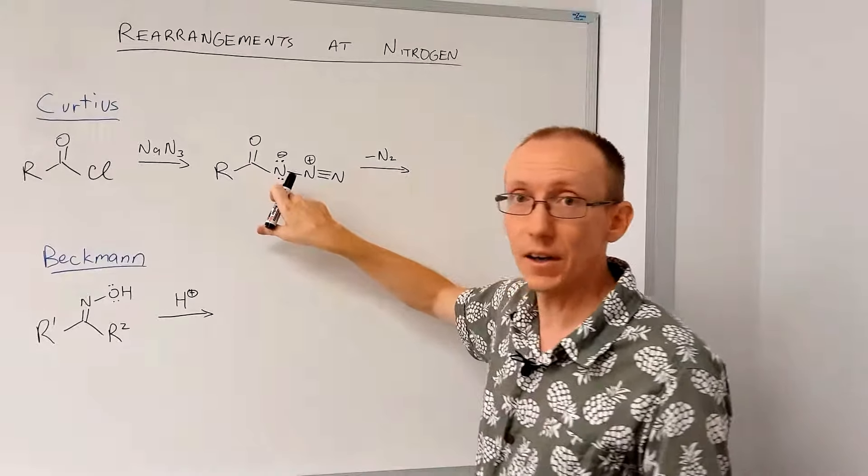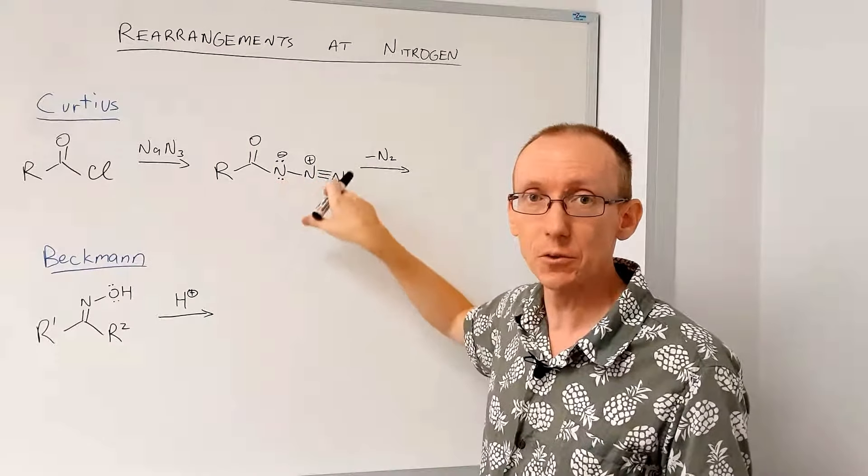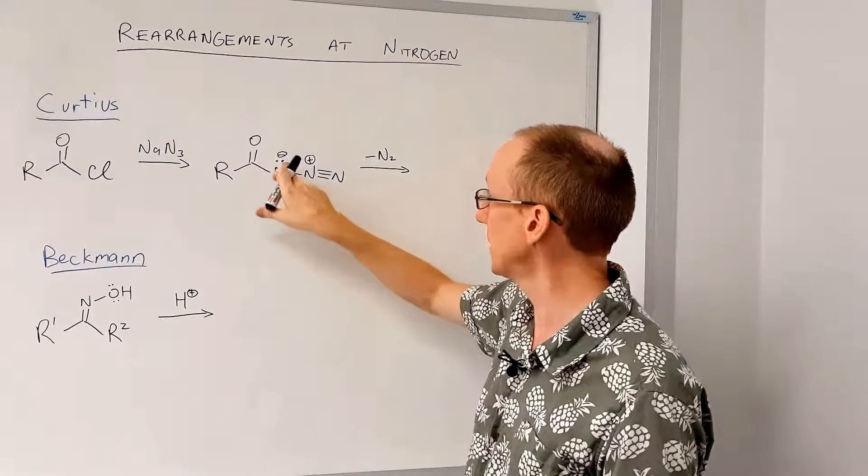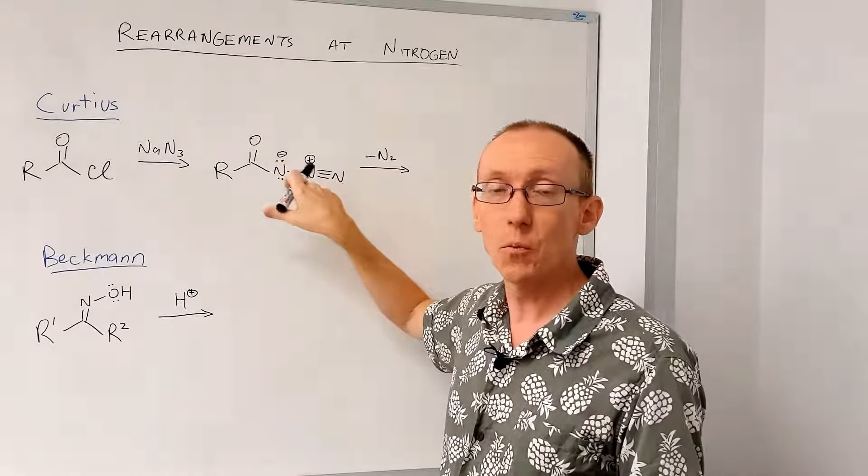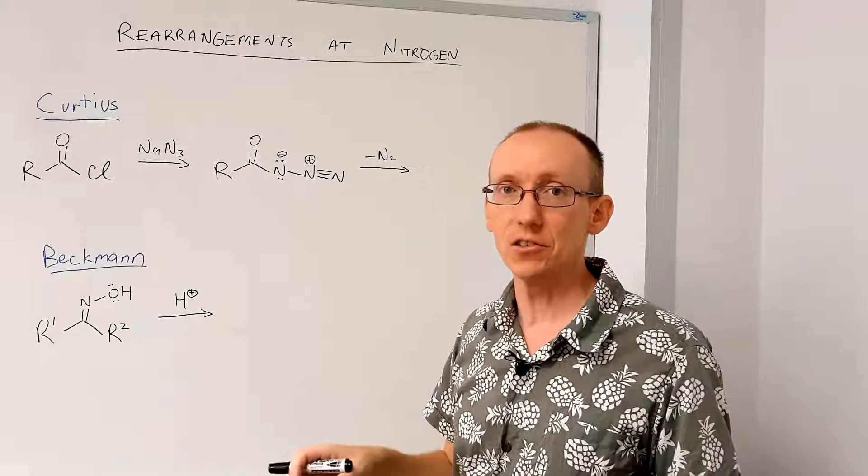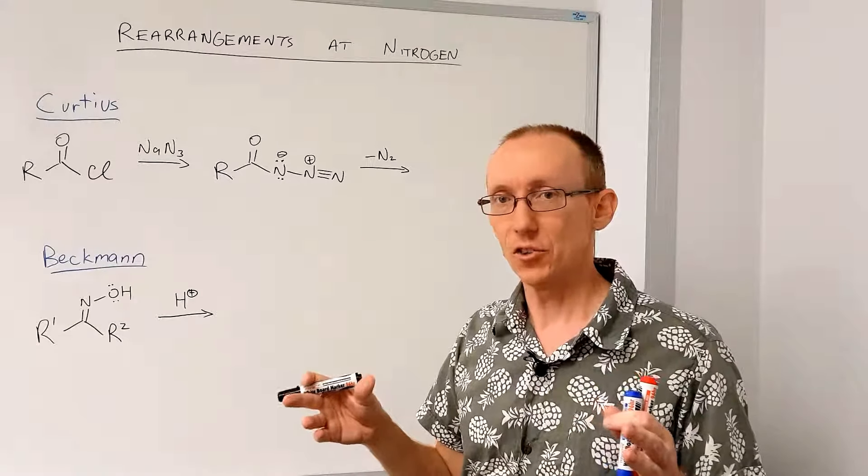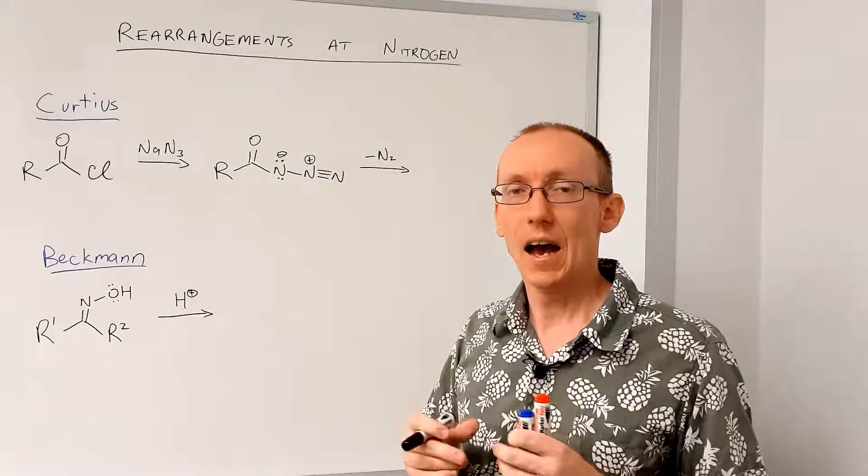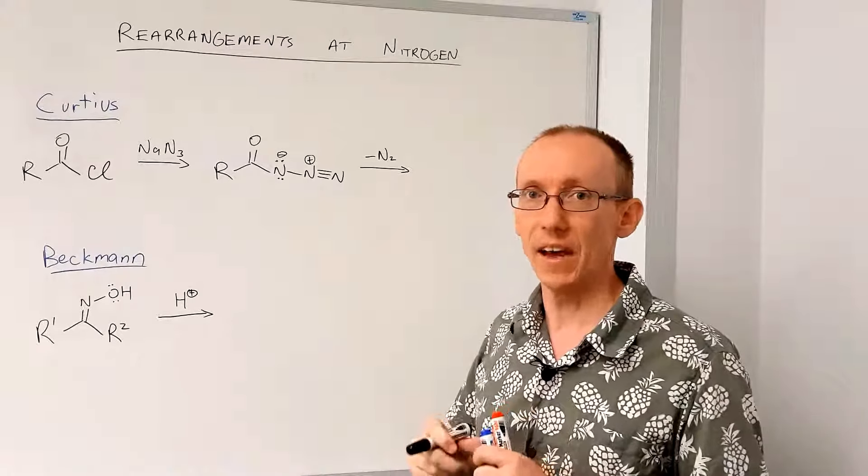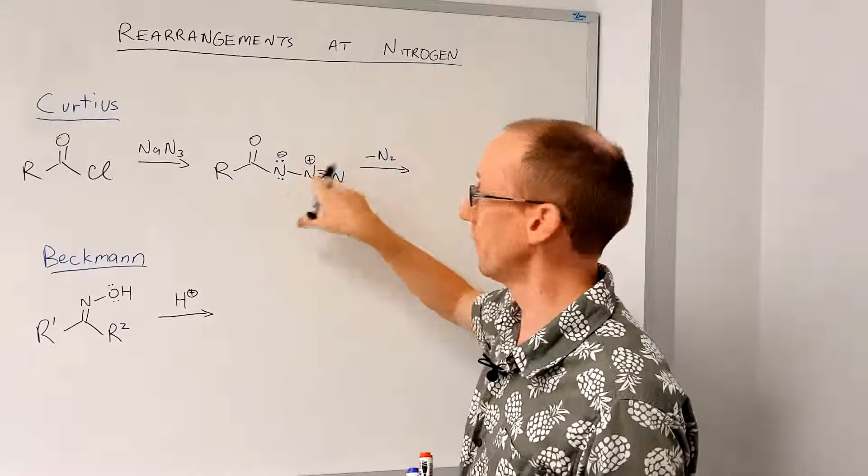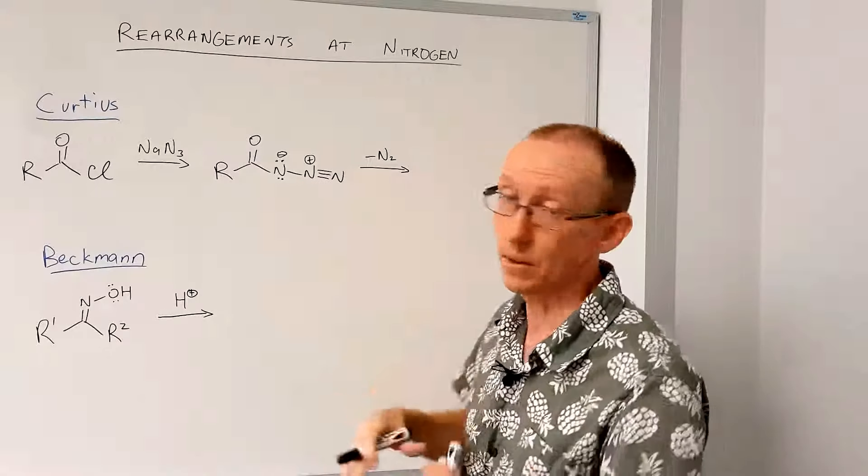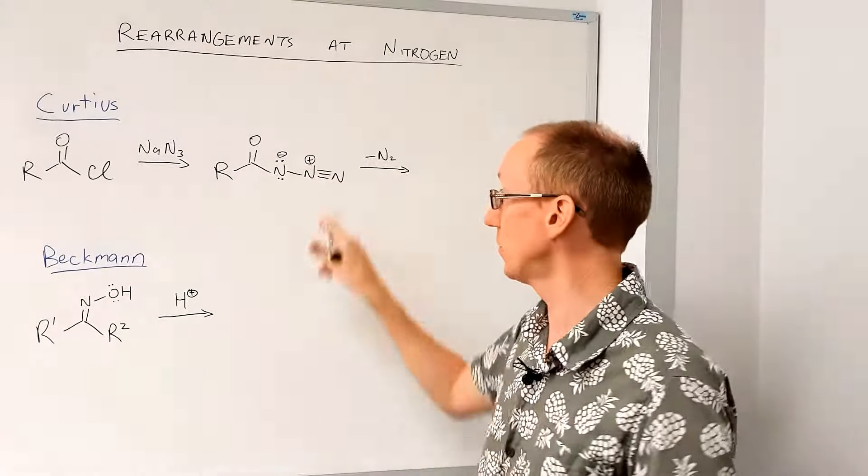Now you may find it tricky to draw out the resonance forms for azides. They'll take a bit of practice, but this is one form, and we can always push arrows from any resonance structure because they're all equivalent in terms of their connectivity, but they're just showing a different arrangement of electrons in a valence sense around the molecule.